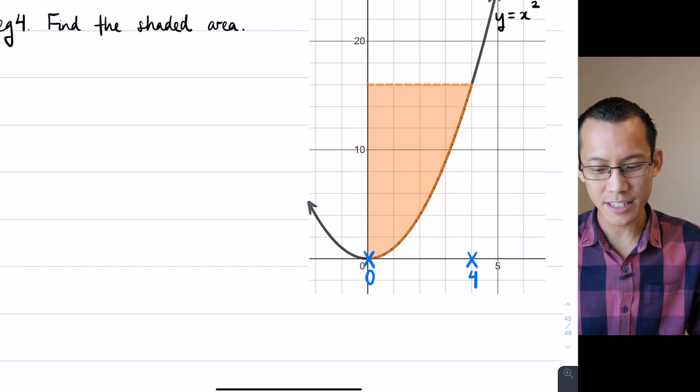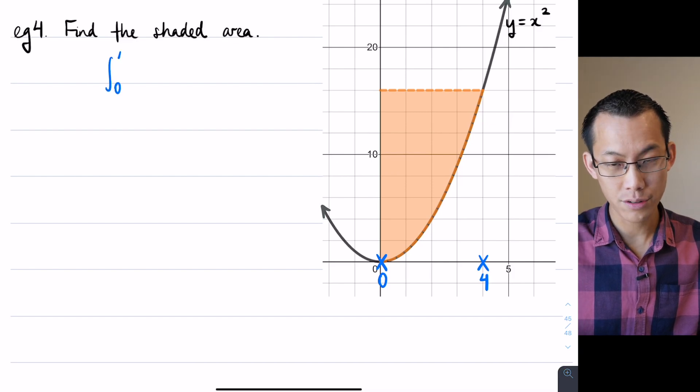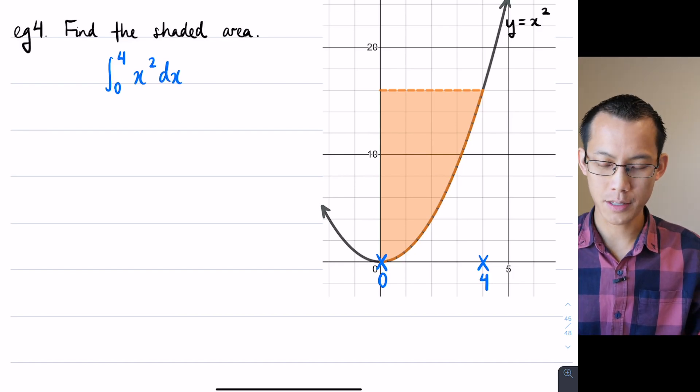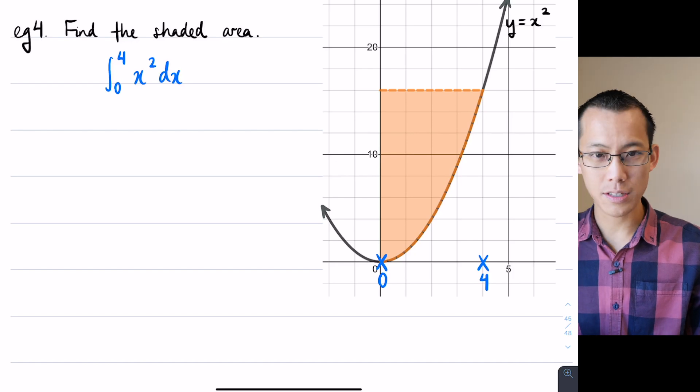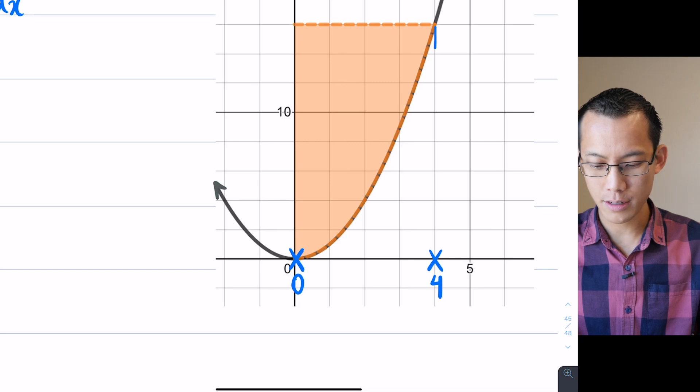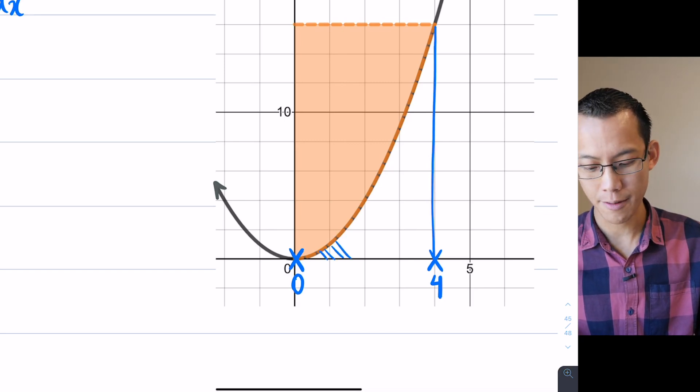So if I integrated, I'm just going to write this at the top here. If I integrated from zero to four and took this function x squared, what area would that give us? It would give us an area, I just wouldn't give us this particular orange one. I'll show you the area we would get. It would be underneath the curve bounded between zero and four. So it would be this guy, right?